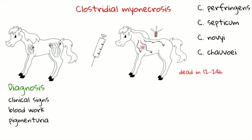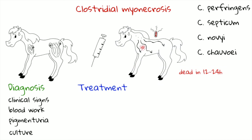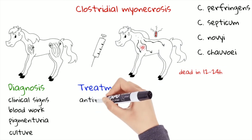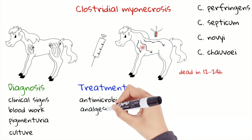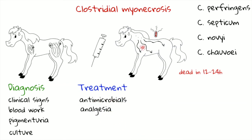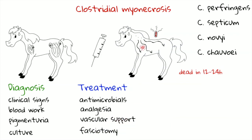This fluid can also be used for culture to isolate the bacteria involved. Treatment should start as soon as possible and it is based on antimicrobials — high-dose penicillin and metronidazole — analgesia with non-steroidal anti-inflammatory drugs and opioids, and fluid therapy for vascular support. The fasciotomy consists in the creation of fenestrations in the muscle fasciae to allow oxygen to reach the tissues.